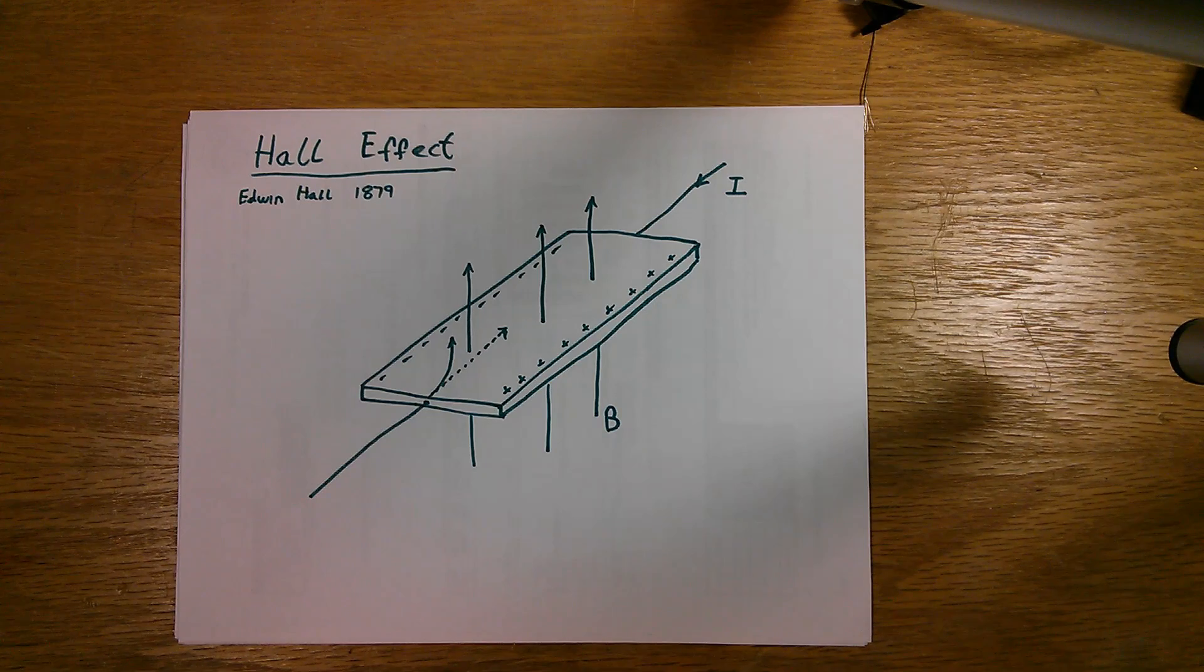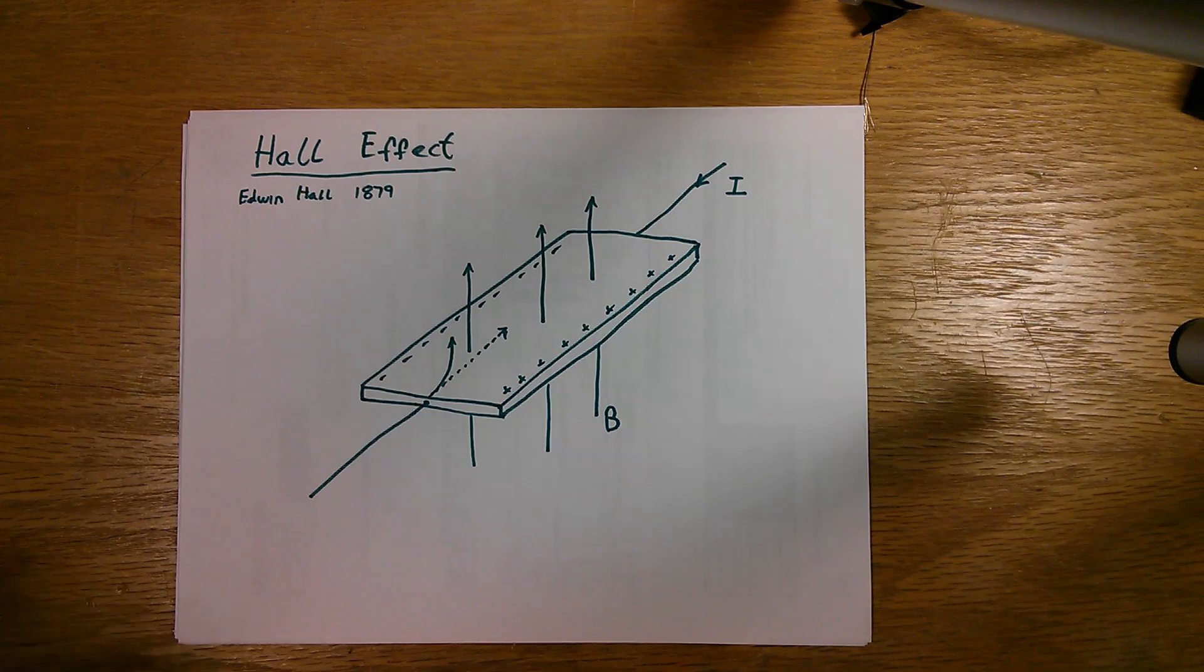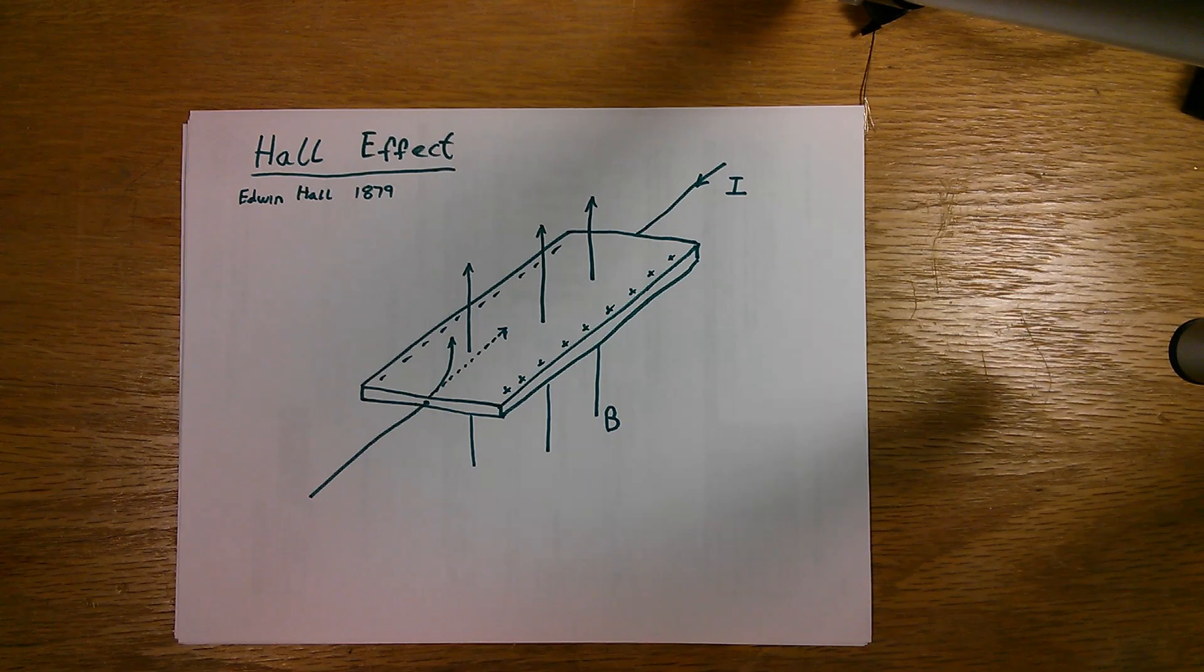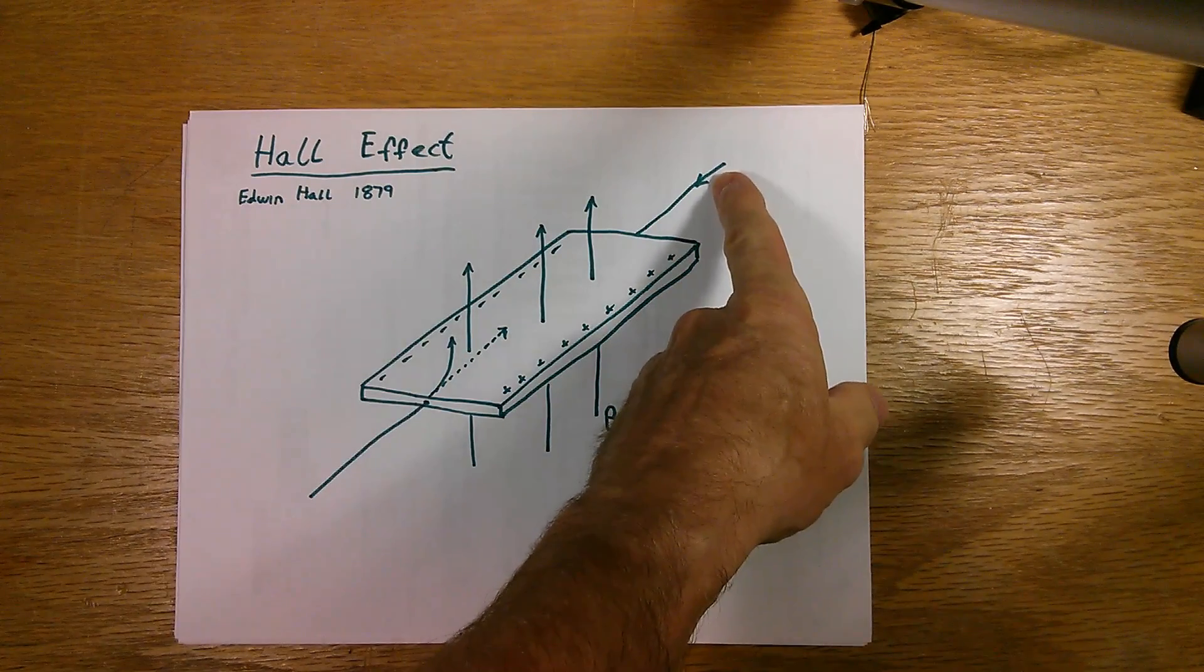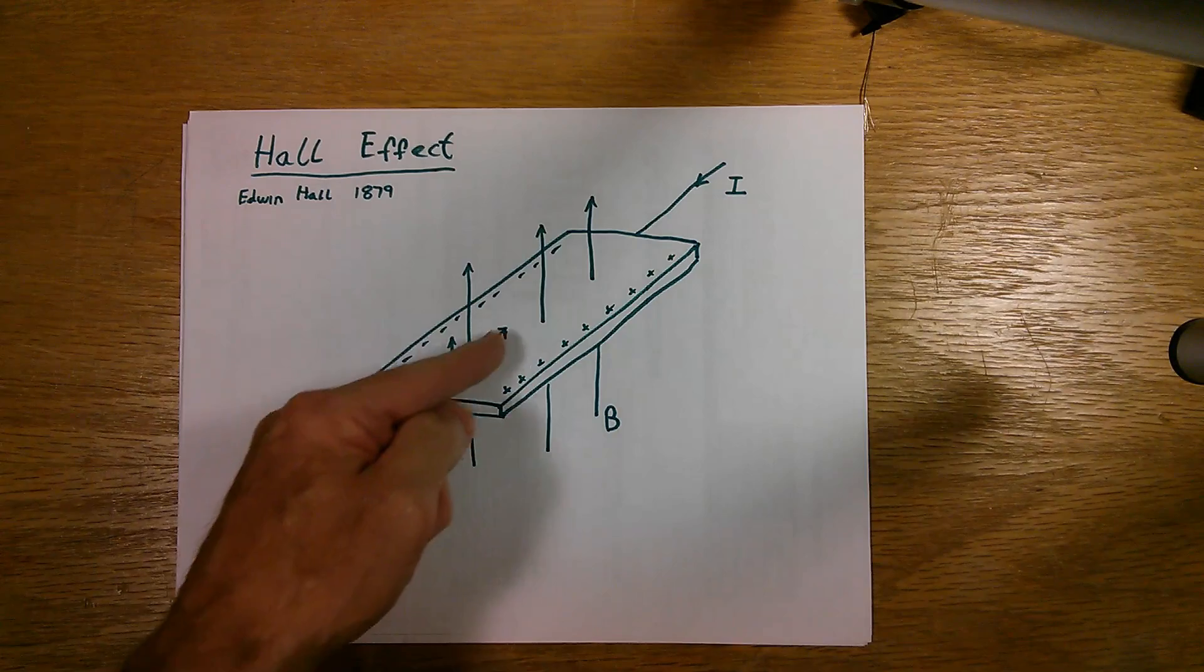And so the actual flow of something that's moving is electrons, and it flows the other direction. So even though I've shown conventional current is going this way, the electrons are flowing this way.